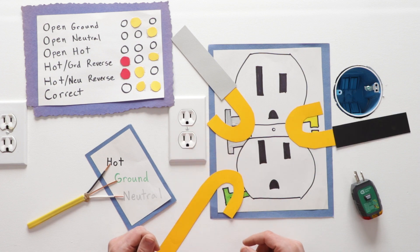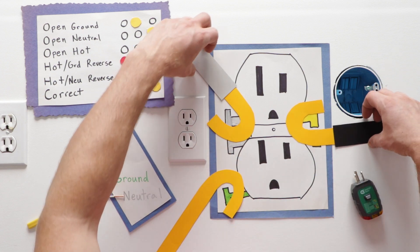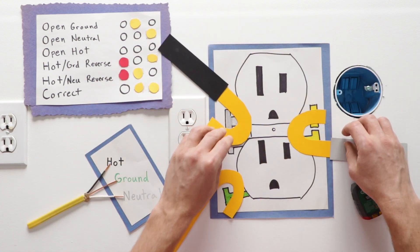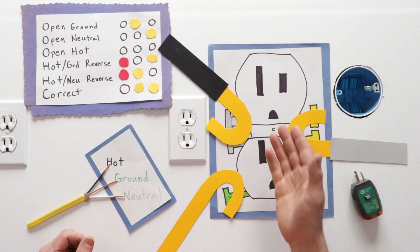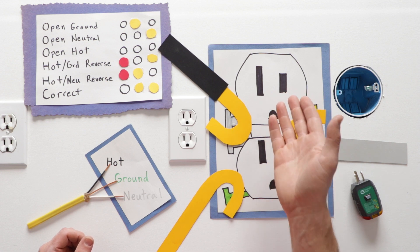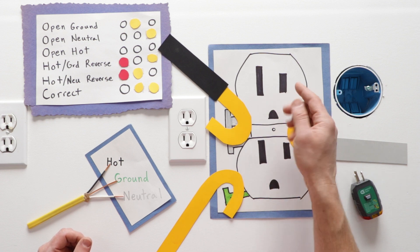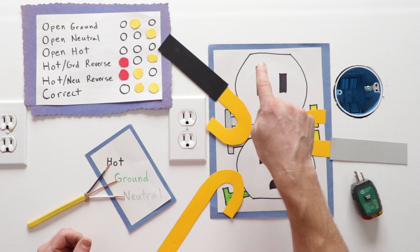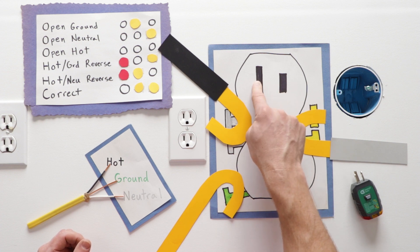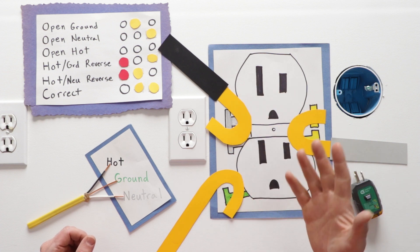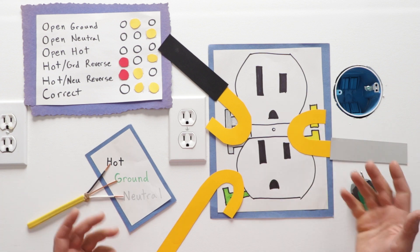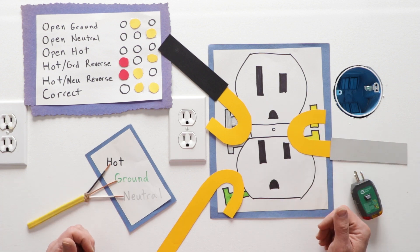The next situation is your hot and your neutral reversed. There's also a really bad situation because you may have an electric appliance and it's expecting the hot to come out of this small prong slot, but it comes out of this big prong slot and it's running reverse through your electronics, which could break something or start a fire.